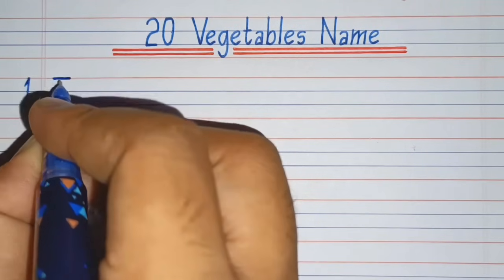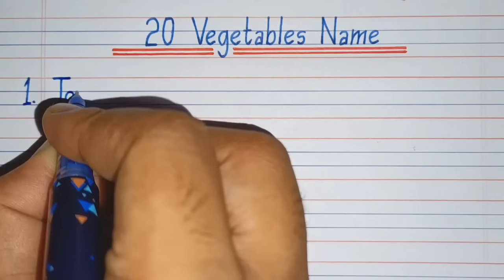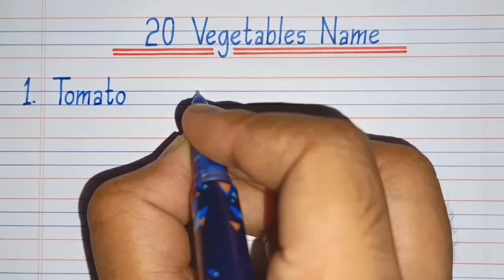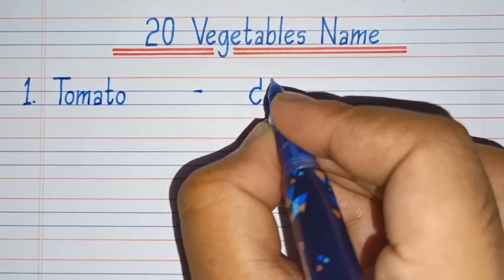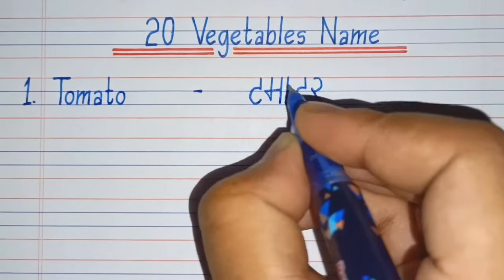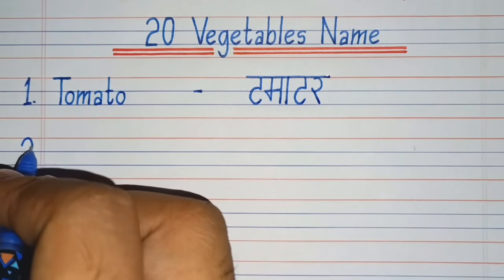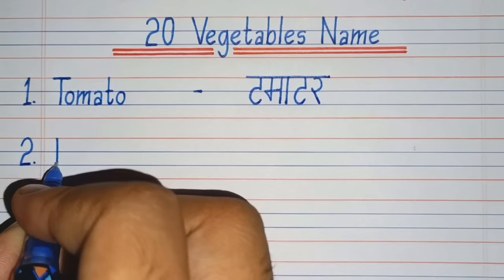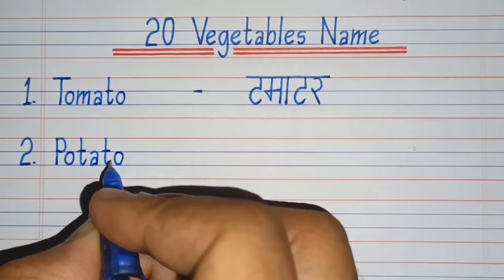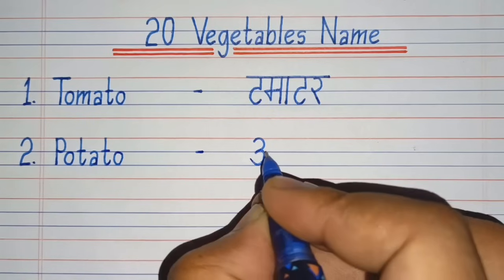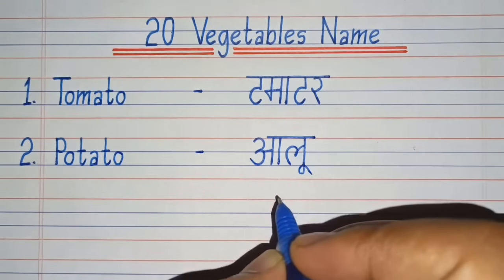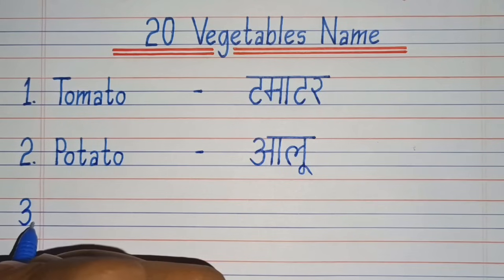First number. T-O-M-A-T-O, Tomato. Tomato means Tamatar. Second number. P-O-T-A-T-O, Potato. Potato means Alu. Third number.